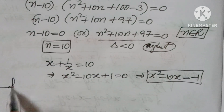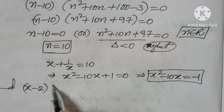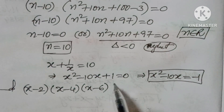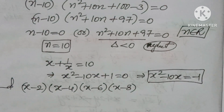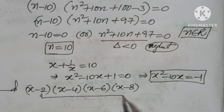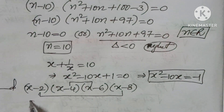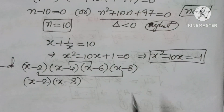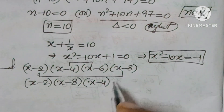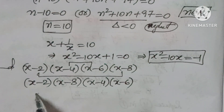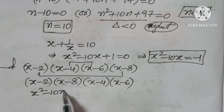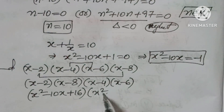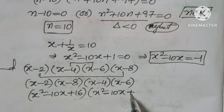Now we find the required product: (x − 2)(x − 4)(x − 6)(x − 8). We multiply the first and last, and the middle two: (x − 2)(x − 8) = x² − 10x + 16, and (x − 4)(x − 6) = x² − 10x + 24.